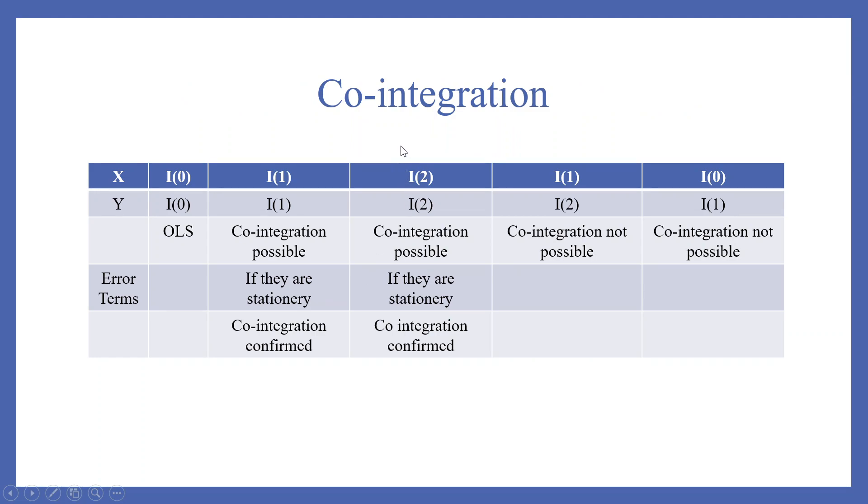Let's try to understand the cointegration in this table. If X, this is X, your independent variable and Y is a dependent variable. If X and Y both are integrated of level 0, we can run the normal OLS. If X and Y both are integrated of level 1, cointegration is possible among them. If error terms are stationary, then we can say that the cointegration is confirmed.